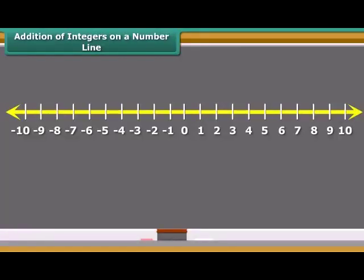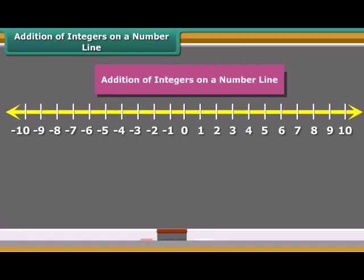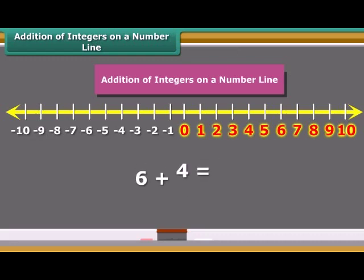Students, now we learn addition of two positive integers on a number line. If we add 6 and 4 on the number line, first move six steps to the right from 0 reaching 6, and then we move four more steps to the right of 6 and reach 10. Thus we get 6 plus 4 is equal to 10.